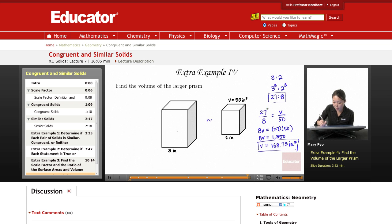Make sure you're going to keep the larger prism as your numerator. So it has to be 27 over the smaller prism. And this is going to be V over 50, the larger over the smaller.